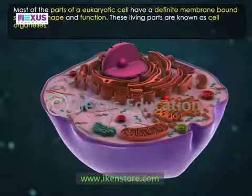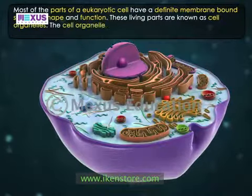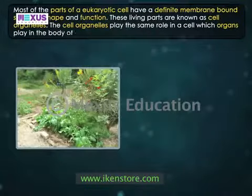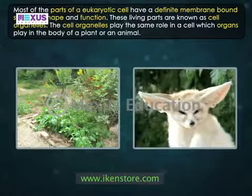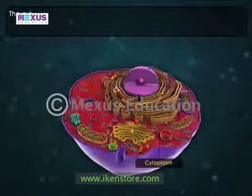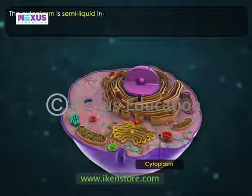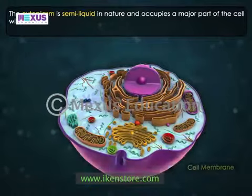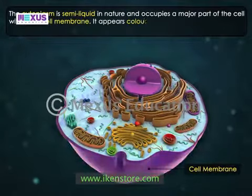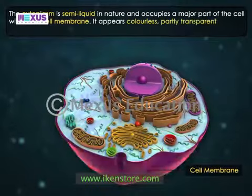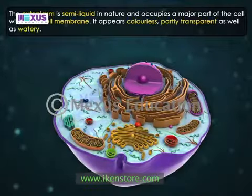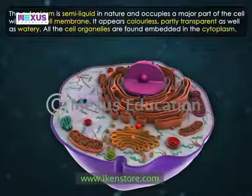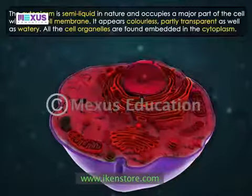Known as cell organelles, they play the same role in a cell which organs play in the body of a plant or an animal. The cytoplasm is semi-liquid in nature and occupies a major part of the cell within the cell membrane. It appears colorless, partly transparent, as well as watery. All the cell organelles are found embedded in the cytoplasm. Let us take a look at them.